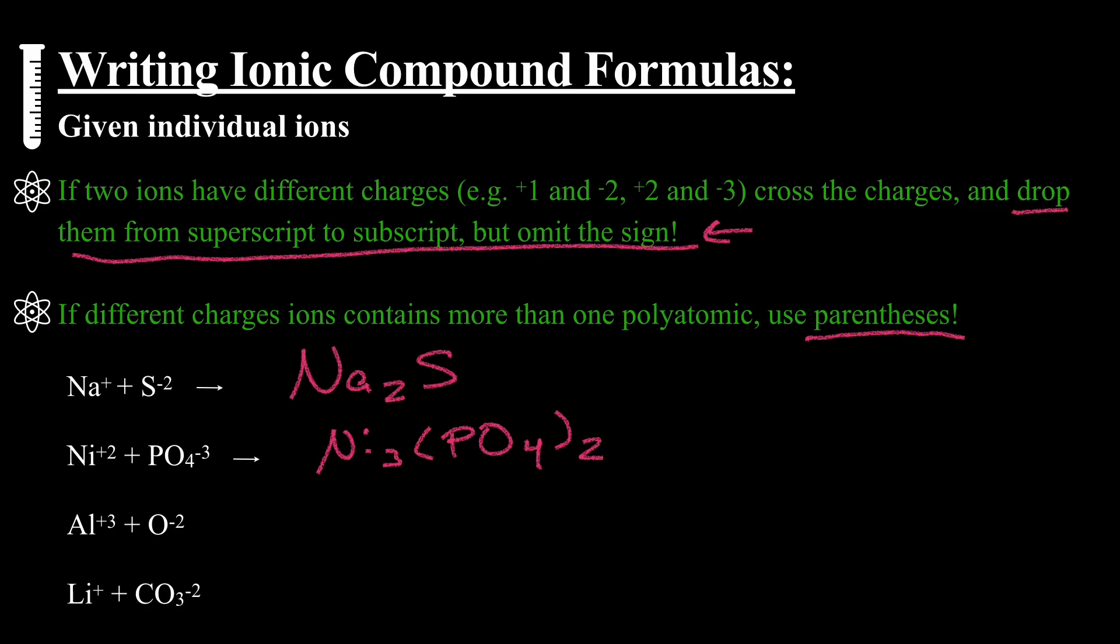Al plus three, plus O minus two. The three from the aluminum goes down to the oxygen. The negative two comes in between the Al and the O, giving us Al2O3.